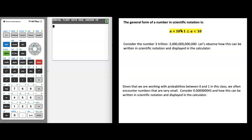Let's jump in and look at an example. Consider the number 3 trillion. How would I take this number and write it in scientific notation? The first thing I'm going to do is put a decimal point somewhere in this number where I can create that initial value between 1 and 10. The logical place to put my decimal point is right after the 3, so my number is 3 or 3.0.